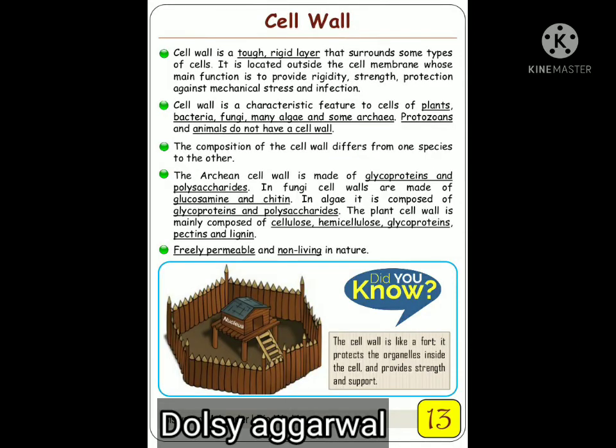Now let's discuss the cell boundaries: first is cell wall, second is cell membrane. The cell wall is a tough, rigid layer which is present around some types of cells — usually plant cells, fungal cells, algal cells, and bacterial cells.